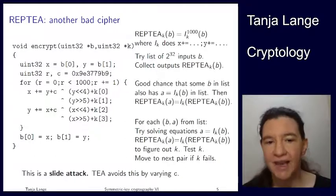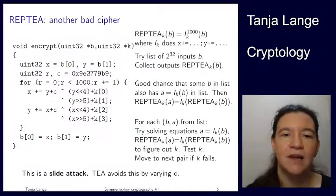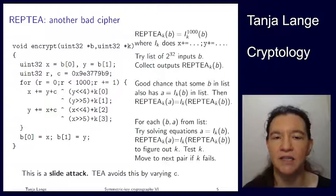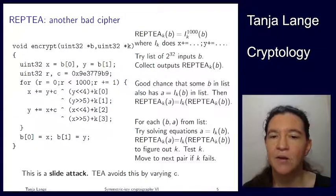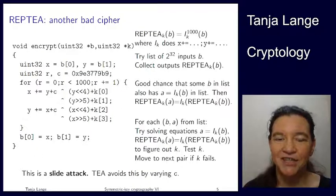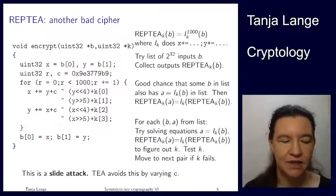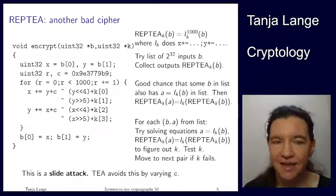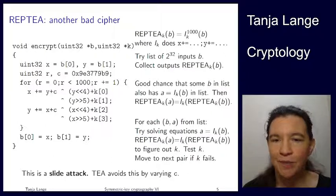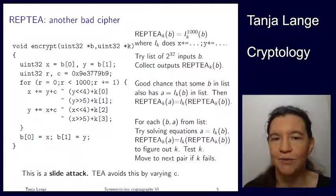TEA is not vulnerable to this because in TEA, C is updated each round rather than kept constant. But this is a teaching example to see what could go wrong. This was the last of the examples of how things could break. I hope this gave you some idea of what the analysis of symmetric key cryptography looks like.